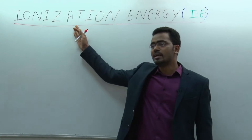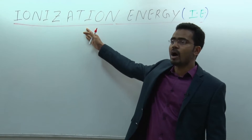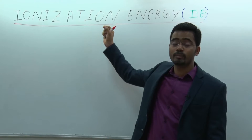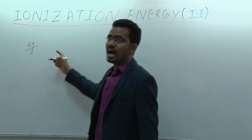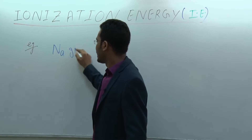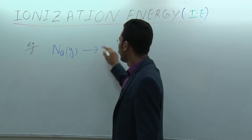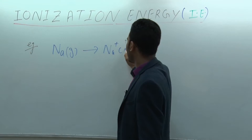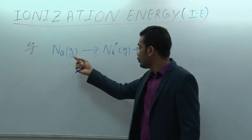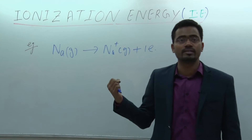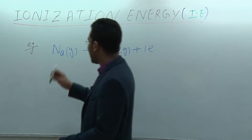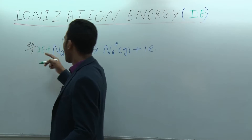Ionization energy is the energy required to remove an electron from the outermost orbit of a gaseous element. It is important that the element must be in the gaseous state. For example, when sodium in gaseous state forms sodium-plus gas plus one electron, the energy required to eject that electron is called ionization energy. You have to provide that energy.